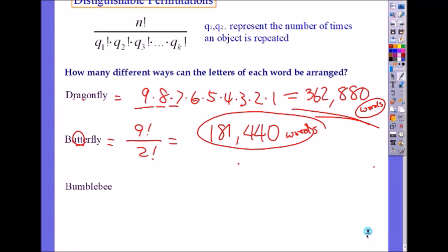What about bumblebee? So it's nine letters again divided by - is there any letter repeated? B, B, B. So now you divide by three factorial. E, E, E. Three factorial. Is there anything else? No.